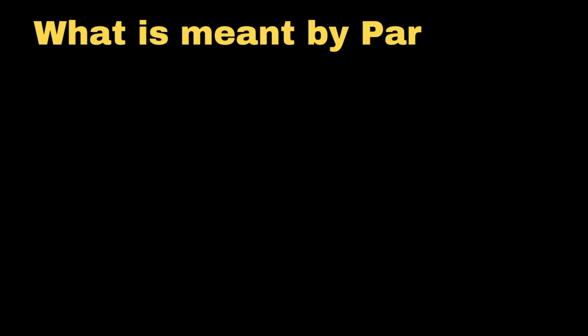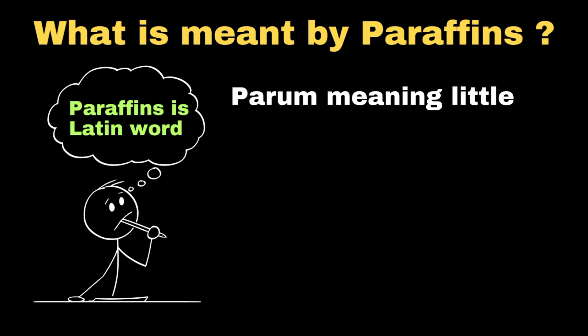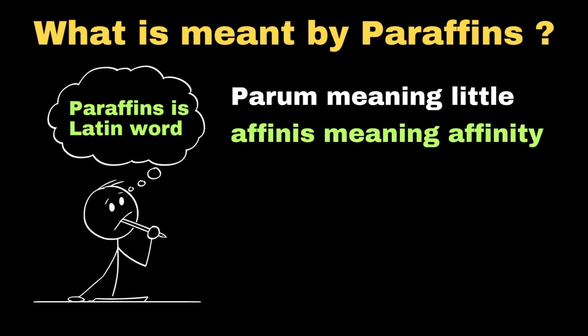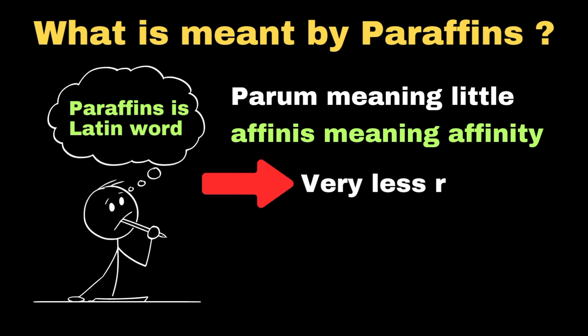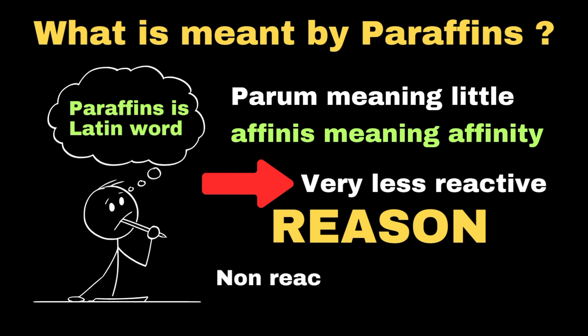Alkanes are also called paraffins. Paraffins is a Latin word, which is a combination of two words: parum, meaning little, and affinis, meaning affinity, which tells us that alkanes are actually very less reactive. The main reason for the less reactivity of alkanes is due to the non-reactivity of the sigma bond present in alkanes.